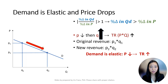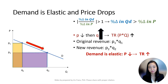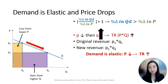Your original revenue is P1Q1, the yellow rectangle. Your new revenue is P2Q2, the purple rectangle. When the price drops, you will lose a little revenue from the lower price. However, you will gain more revenue from the bigger quantity. Hence, your total revenue goes up.